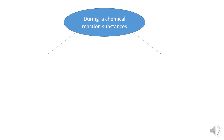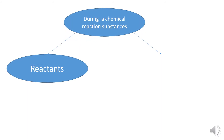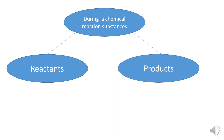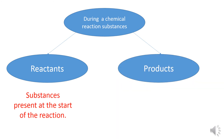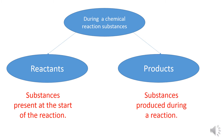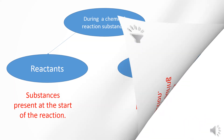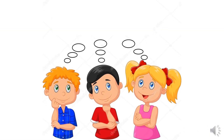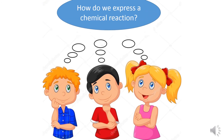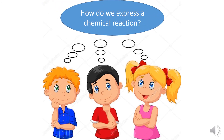During a chemical reaction, substances can be reactants or products. Reactants are substances present at the start of the reaction, and products are substances produced during a reaction. Now let's discuss the third objective: how do we express a chemical reaction?